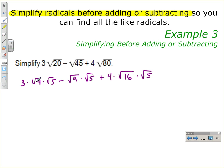Simplifying each one of these, 3 times the square root of 4 gives us 6. The square root of 9 is 3, so that gives us minus 3 square roots of 5. And 4 times the square root of 16 is the same as 4 times 4, which gives us 16 square roots of 5.